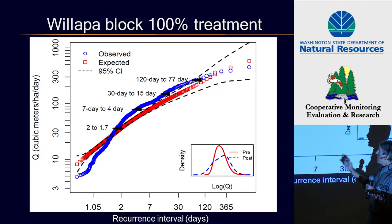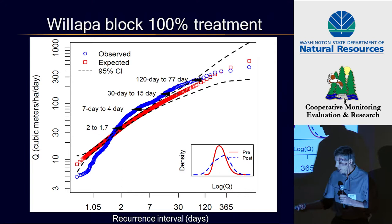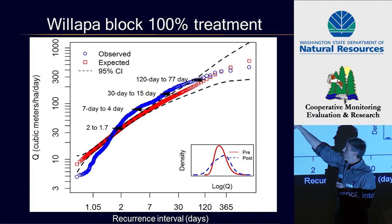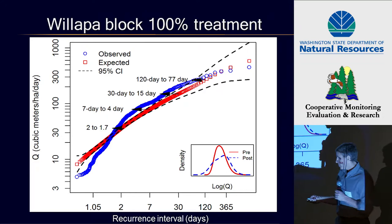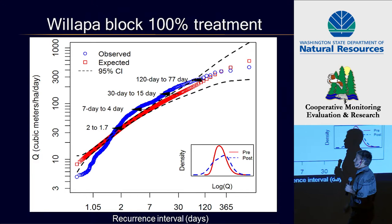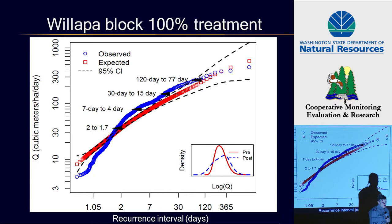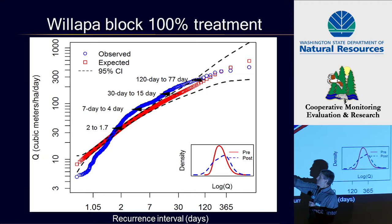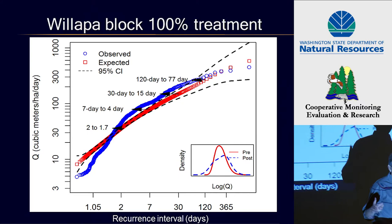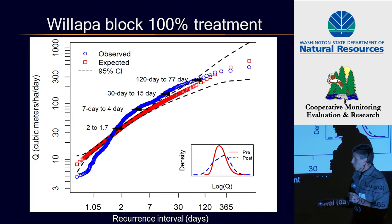I'm a geomorphologist so I tend to focus on floods, but looking at the central tendency, there's no change in the mean or median — very little change. But for all events less than the mean or median, we have less discharge. If a biologist came to me and said there's a creature that gets really stressed out when discharge gets less than 10 cubic meters per hectare per day, I would say that in the pre-treatment we would expect maybe two or three days when they'd be stressed by low flows, but in the post-treatment there are probably 40 days when discharge is less than that.